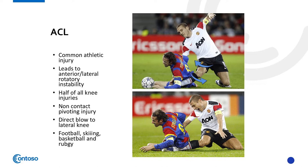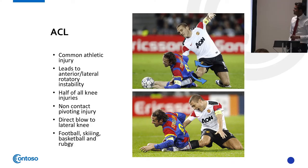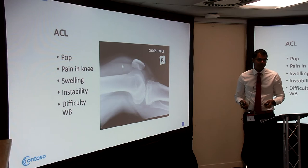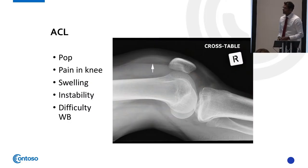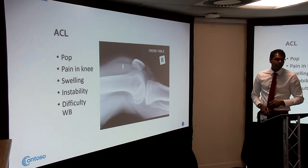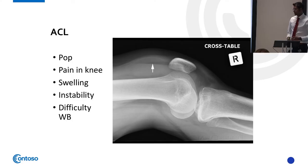ACL injuries lead to anterior and lateral rotational instability, accounting for half of all knee injuries, typically from a non-contact pivoting injury in football, skiing, basketball, or rugby. Key signs include a pop, knee pain, swelling, and instability — players may try to play on with a wobbly leg. On x-ray, look for a lipohemarthrosis — fat and blood in the joint. Fat shows as a dark shadow, blood as a lighter area — indicating bony or ligamentous injury because bone contains fat marrow.